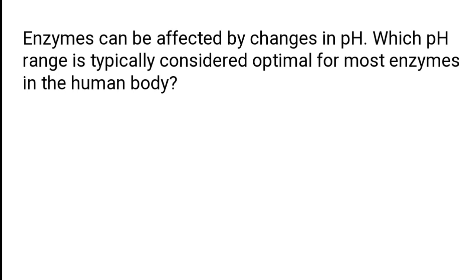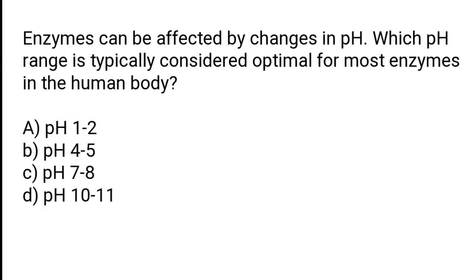Enzymes can be affected by changes in pH. Which pH range is typically considered optimal for most enzymes in the human body? A) pH 1 to 2, B) pH 4 to 5, C) pH 7 to 8, D) pH 10 to 11. The correct answer is option C, pH 7 to 8.